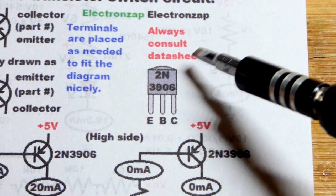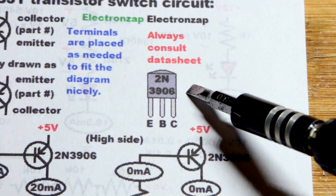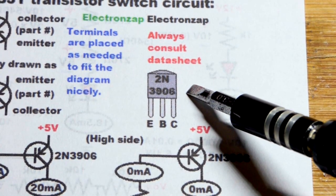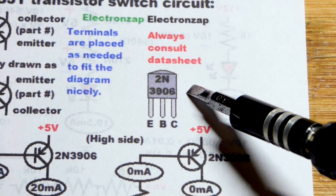The specific PNP BJT we're going to use is the 2N3906, so that's close to the same number of the last video I did, the 2N3904, which was an NPN bipolar junction transistor.